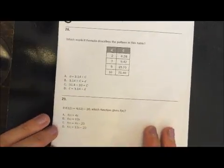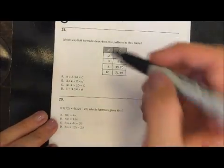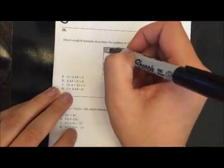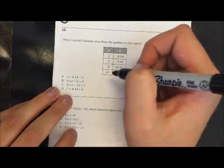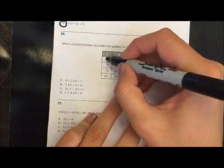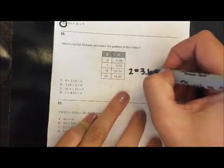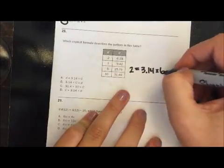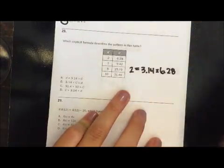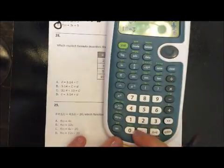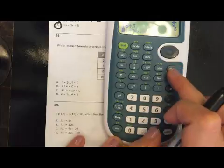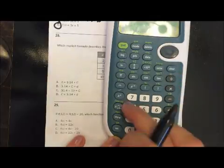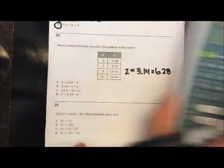Alright, 28. Which explicit formula describes the pattern in this table? Again, plug your values for D in and see if you get C as a result. Okay, so first one. It would be 2 equals 3.14 times C times 6.28. Well, no way in the world that 3.14 times 6.28 is going to give me 2. So that's not going to work.